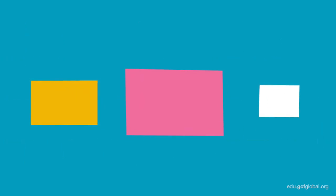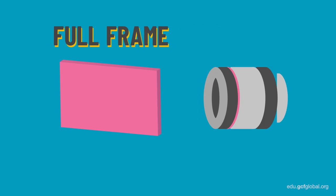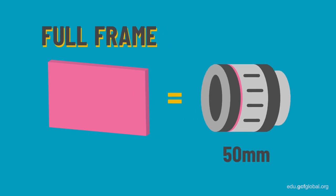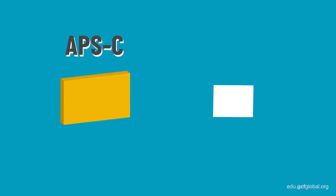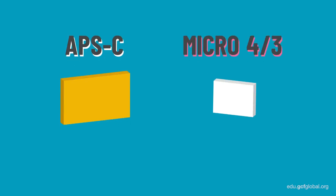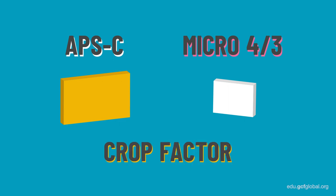Sensors come in different sizes. The standard size sensor is also known as full-frame, and features a focal length that offers higher quality images. Then, there are other sensors that are much smaller and lighter. When using a lens on a camera with these types of sensors, the field of view is reduced.